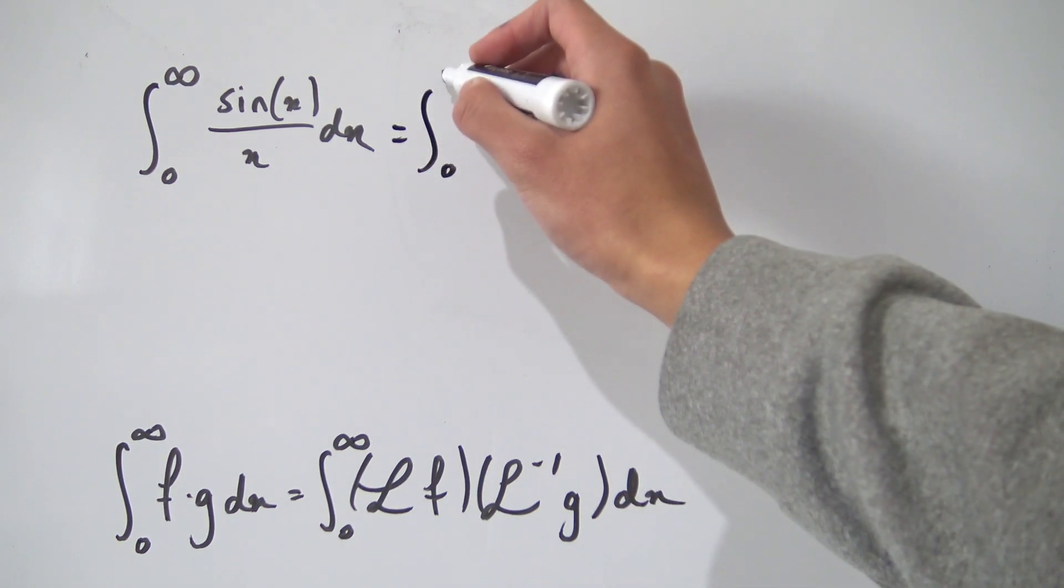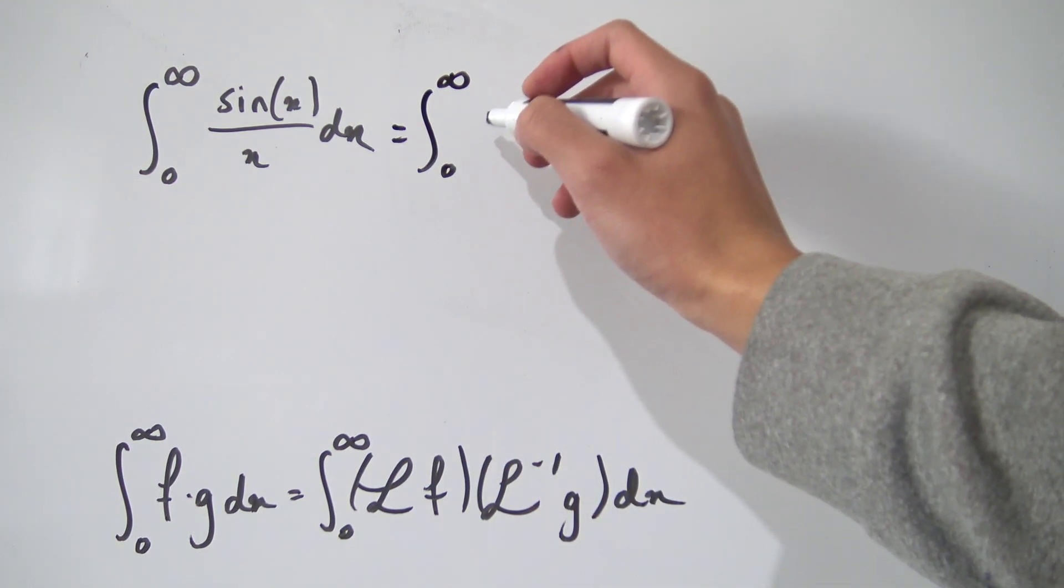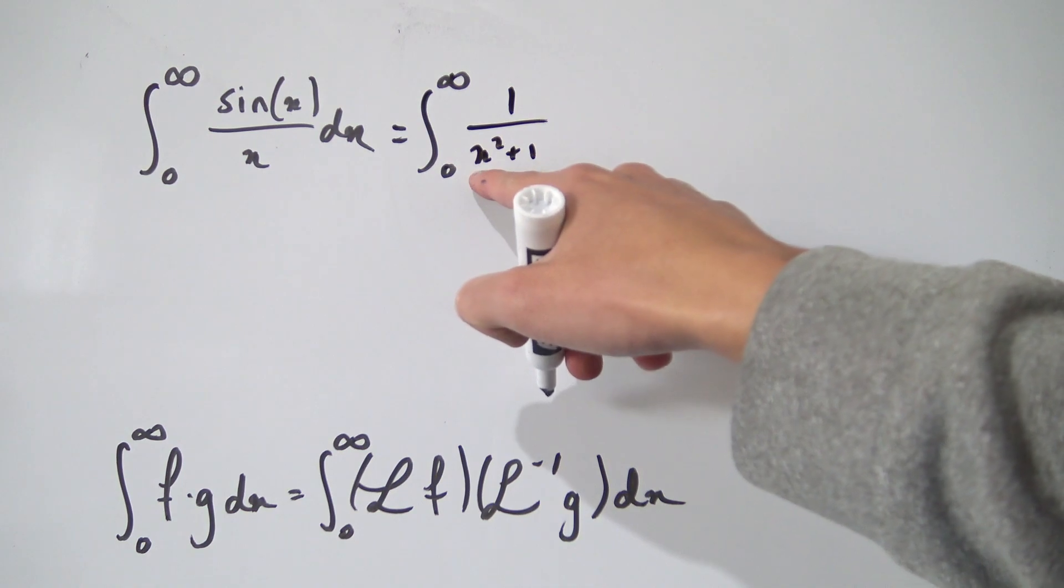the integral from zero to infinity of the Laplace transform of f, which is the Laplace transform of sine, which is just 1 over x squared plus 1. We're just choosing x as our dummy variable in this case, and